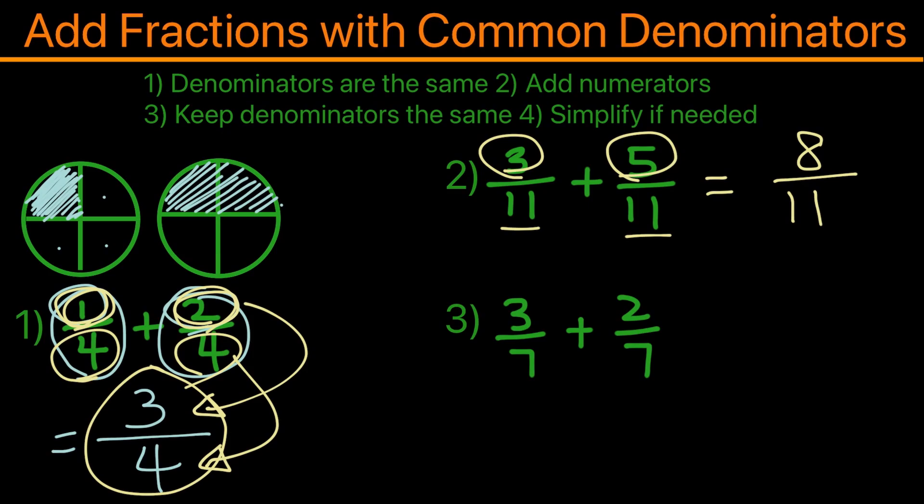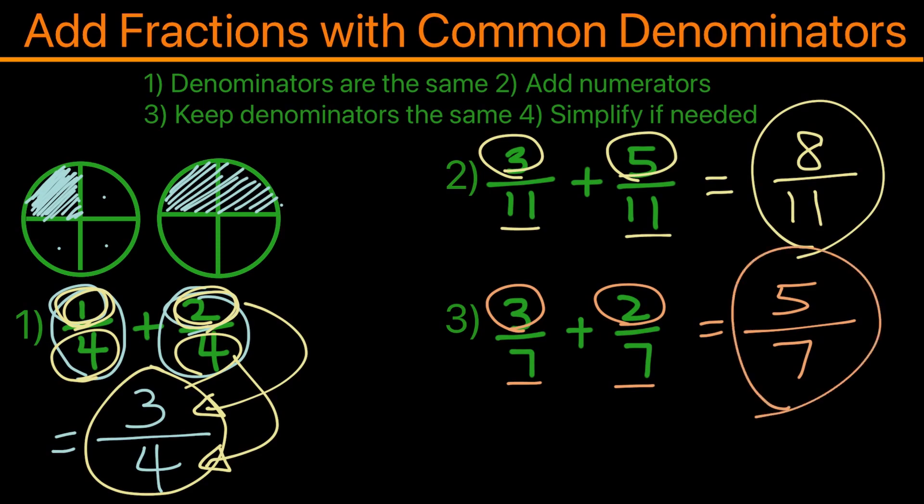Now for our final example, we can see that 7 are the same, so we'll add 3 plus 2 equals 5, keeping the denominator the same, so it will be 7. And simplify if needed. Since 5 over 7 can no longer be simplified, the answer is 5 over 7.